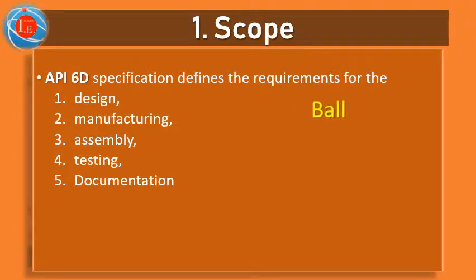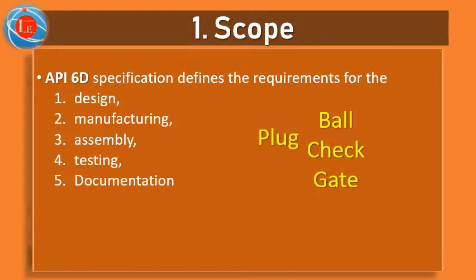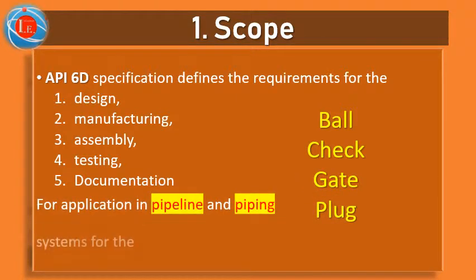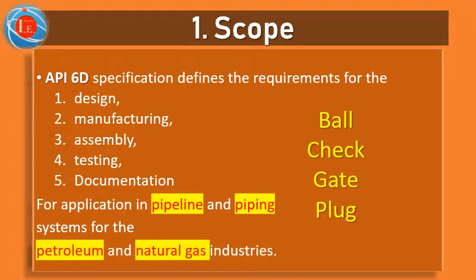Ball valves, check valves, gate valves, and plug valves. These types of valves are usually used for applications in pipeline and piping systems for the petroleum and natural gas industries.